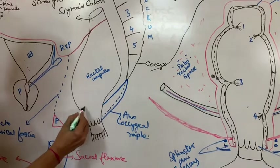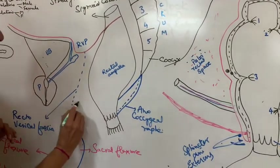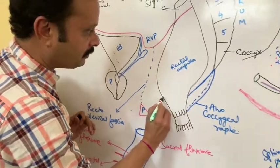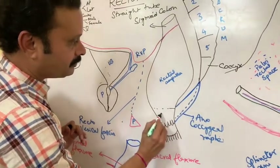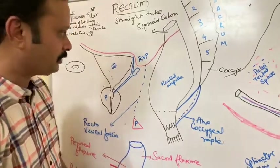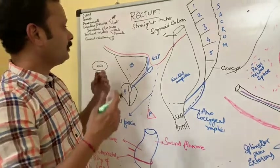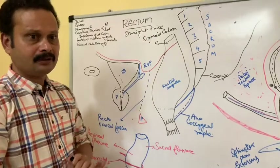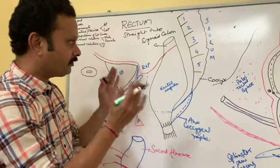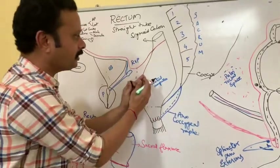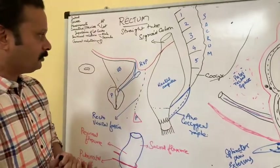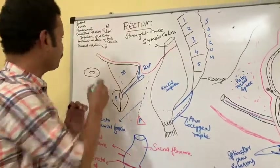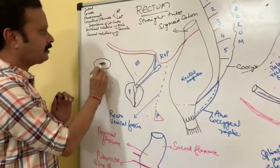The anorectal junction is situated at the level of the apex of the prostate gland. The apex of the prostate corresponds with the anorectal junction. Regarding measurements, the rectum is around 12 cm in length, or 5 inches. The width is around 4 cm at the beginning, and the most dilated part is called the rectal ampulla. Normally when empty, both the anterior and posterior walls of the rectum are approximated, and on cross-section it presents a transverse slit.